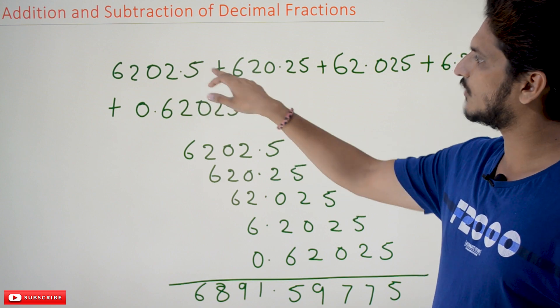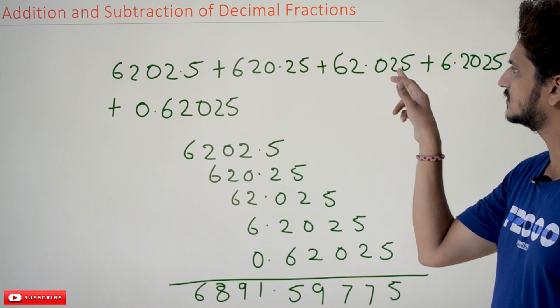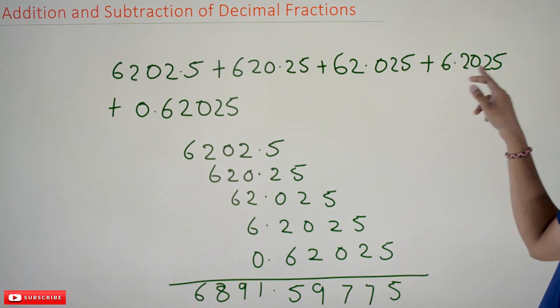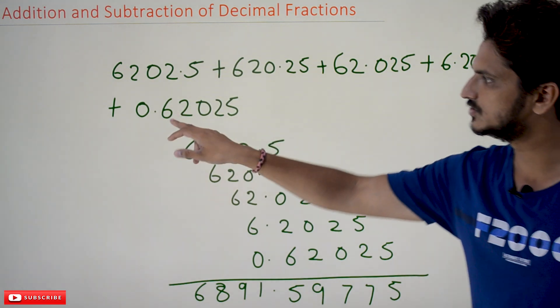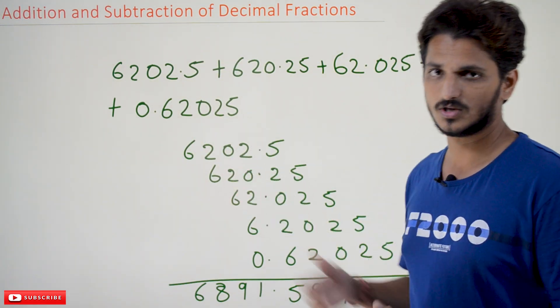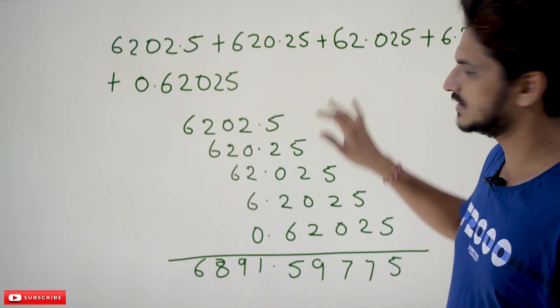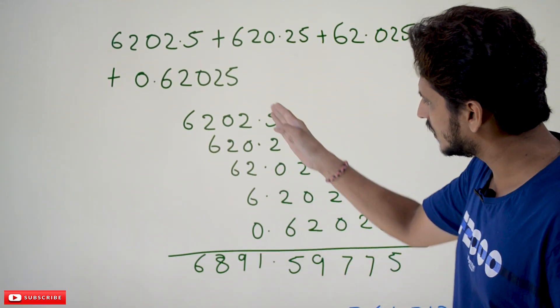Consider this problem: 6202.5 plus 620.25 plus 62.025 plus 6.2025 plus 0.62025. If you want to add all those numbers, the logic here is very simple. Arrange the numbers in order so that all the dots should come in sequence, in a straight line.